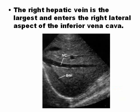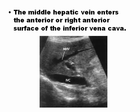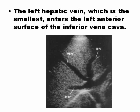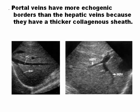The right hepatic vein is the largest and enters the right lateral aspect of the inferior vena cava. The middle hepatic vein is anterior, and the left hepatic vein is the smallest one, entering the left side of the inferior vena cava. Portal veins have more echogenic borders than hepatic veins — you can differentiate them because hepatic veins do not have echogenic walls.